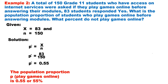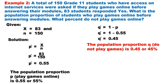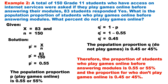It means that the population proportion P — referring to students who play games online before answering modules — is 0.55 or 55%. To solve for Q-hat, use the formula 1 minus P. Substituting 0.55: 1 minus 0.55, Q-hat equals 0.45. To interpret the result, the proportion of students who play games online before answering modules is 0.55 or 55%, and those who do not is 0.45 or 45%.